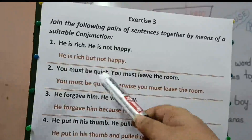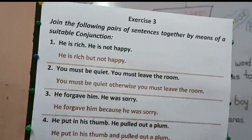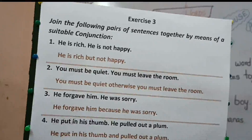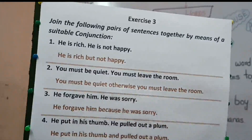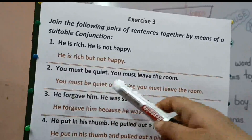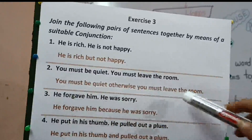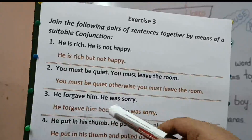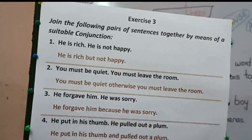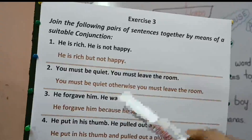Second part: you must be quiet. You must leave the room. Here there is a condition — if you can't be quiet you must leave the room. When these type of sentences come we use 'otherwise' as a conjunction. You must be quiet, otherwise you must leave the room. Third part: he forgave him. He was sorry. Why he forgave him? Because he was sorry. Here the reason is given, so we are using 'because'.